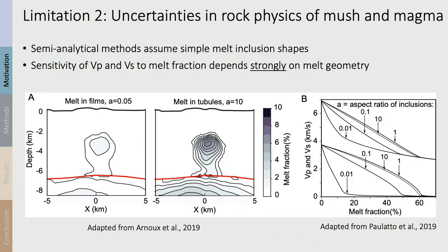The second limitation, and this is the one I want to focus on today, is the large uncertainties in the rock physics methods that link melt fractions to seismic properties. Most published melt fraction estimates from seismology are based on semi-analytical methods that assume simple melt inclusion shapes, usually ellipsoidal. The sensitivity of VP and VS to melt fraction depends strongly on the chosen melt geometry.